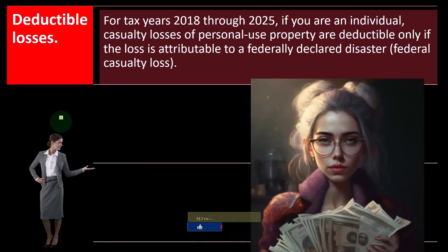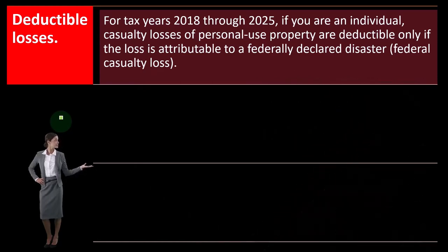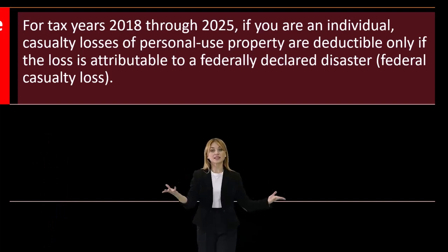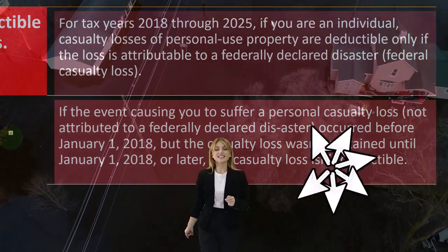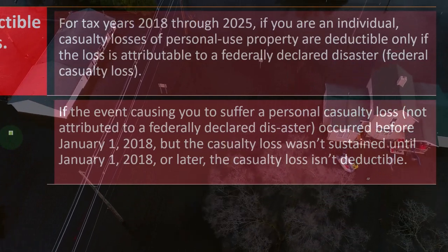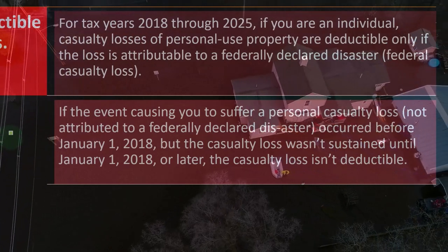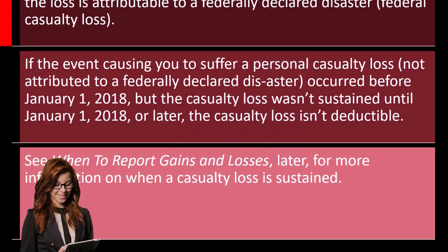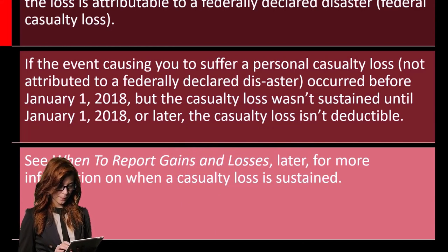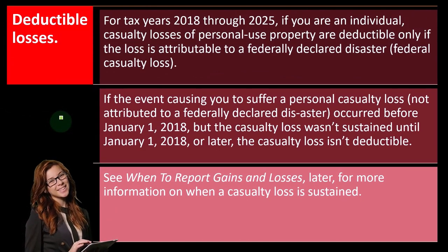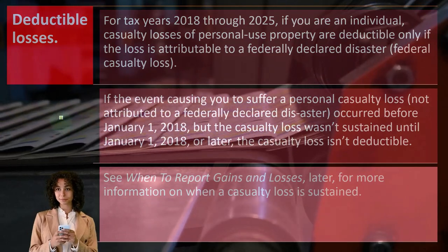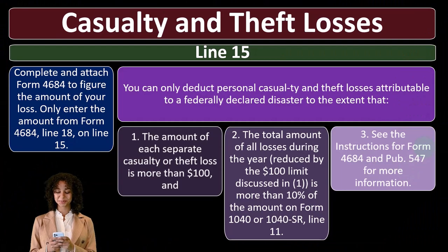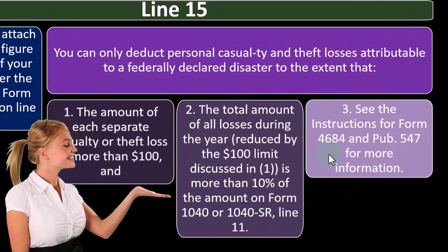Deductible losses for tax years 2018 through 2025: if you are an individual, casualty losses of personal use property are deductible only if the loss is attributable to a federally declared disaster — a federal casualty loss. If the event causing a personal casualty loss not attributed to a federally declared disaster occurred before January 1, 2018, but the casualty loss wasn't sustained until January 1, 2018 or later, the casualty loss isn't deductible. For more detail, see IRS Publication 547 and Form 4684 and related instructions.